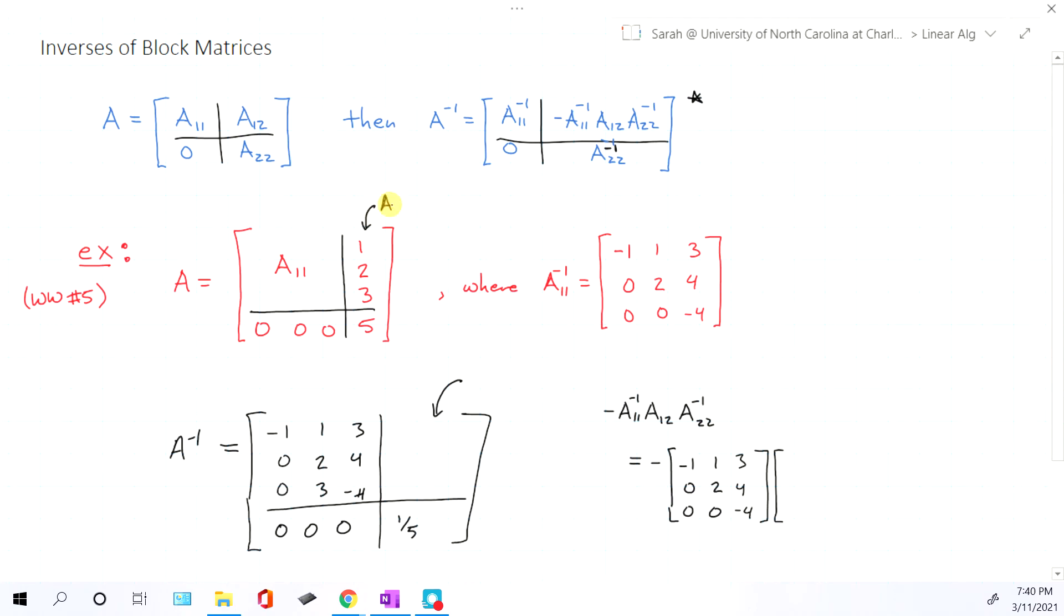A12, this is the guy that in the block position is first row of blocks, second column of blocks. So this is actually a vector or a three by one matrix of the numbers one, two, three. And lastly, we have A22 inverse. In our case, that's just the number one over five.